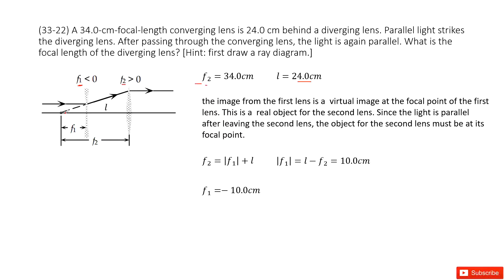But now we look at this problem. First one, the parallel light getting in and refracted to F2 and then becomes parallel the second time.